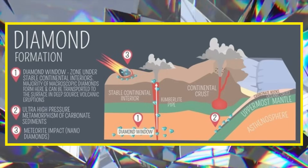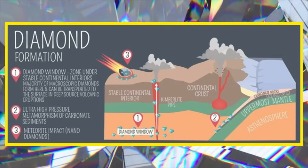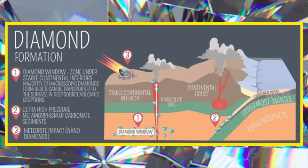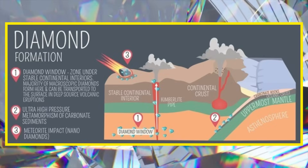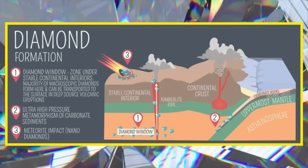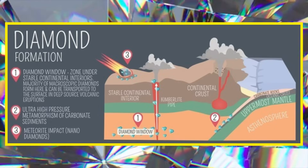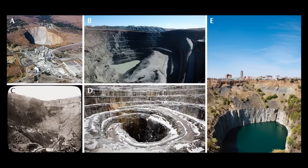Diamonds travel through volcanic pipes, also known as kimberlite pipes, named after the South African city of Kimberley where they were first discovered. The extraction of diamonds can take place in two types of deposits: primary and secondary. In primary deposits, diamonds are found in kimberlite and extracted by crumbling it away, while in secondary deposits they are found in river sand or gravel.